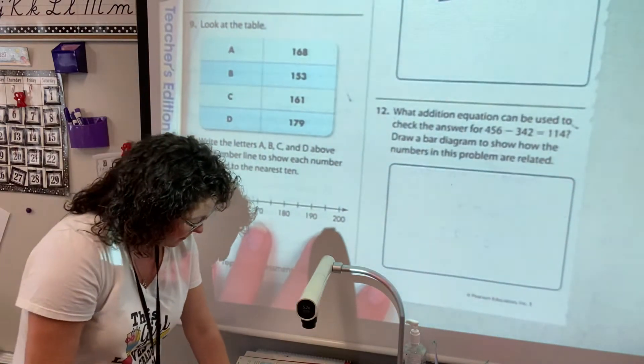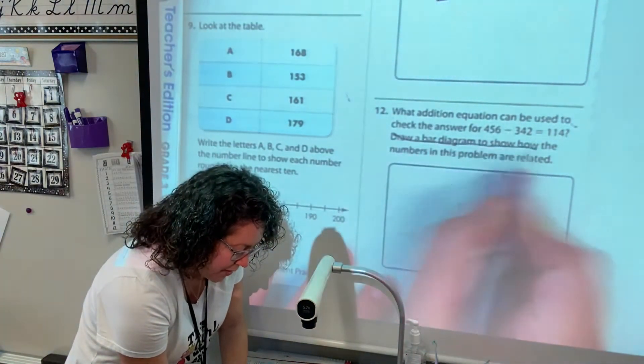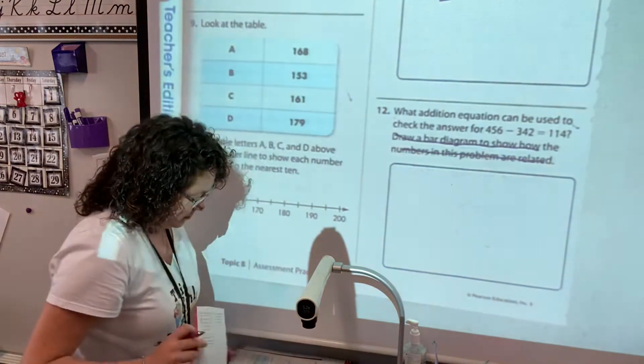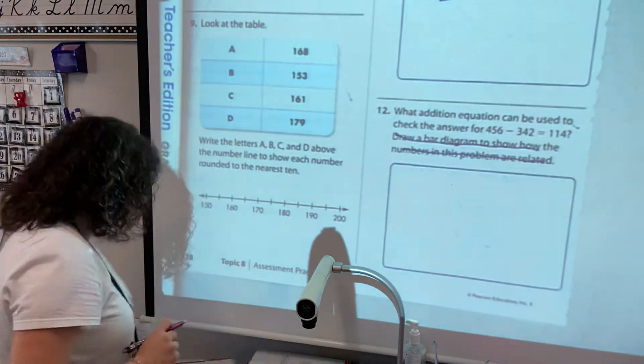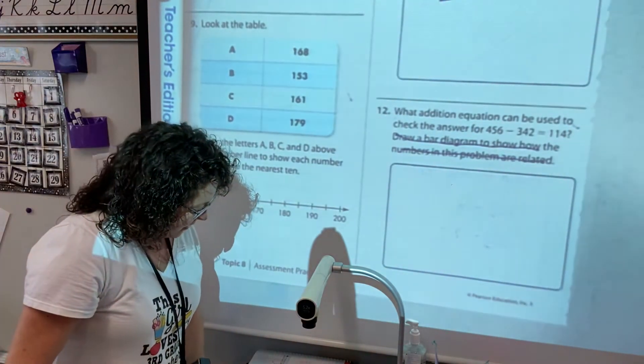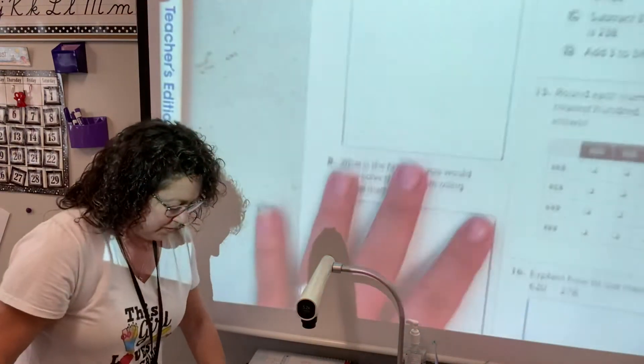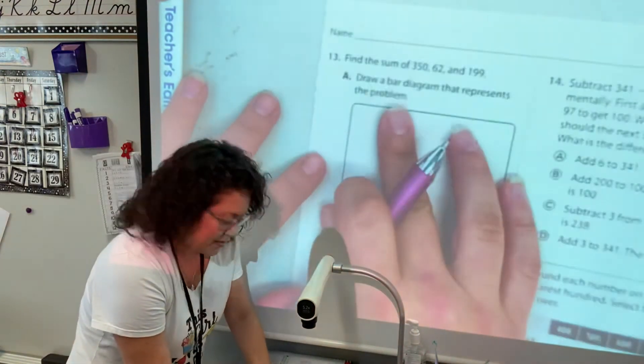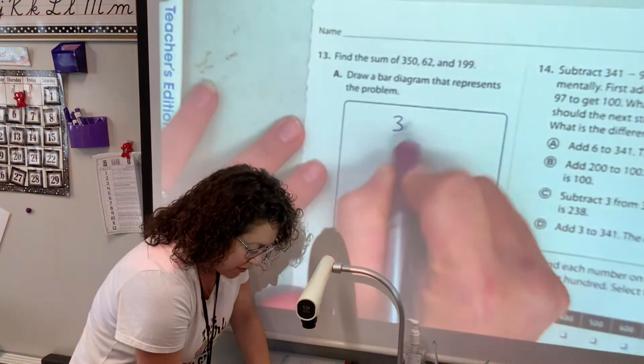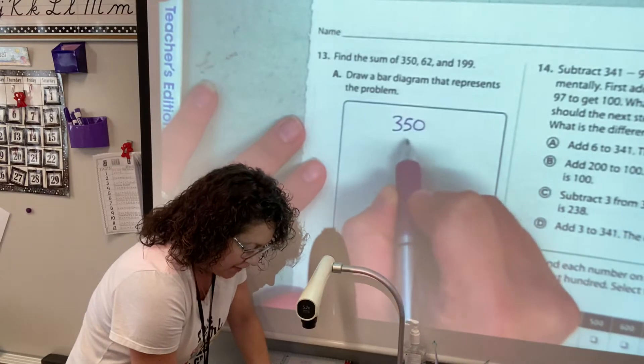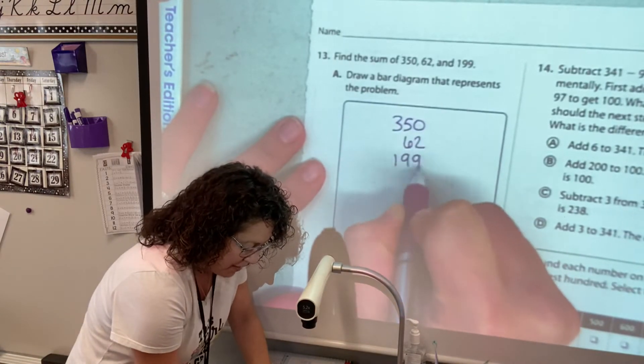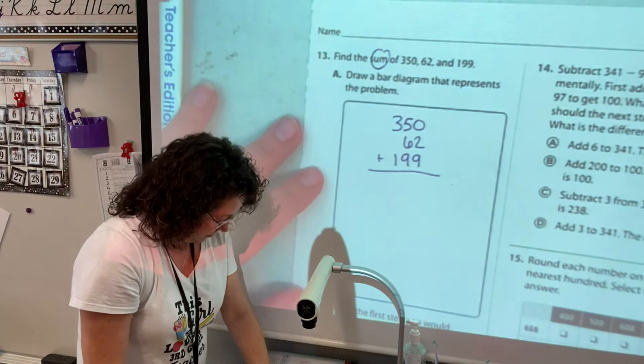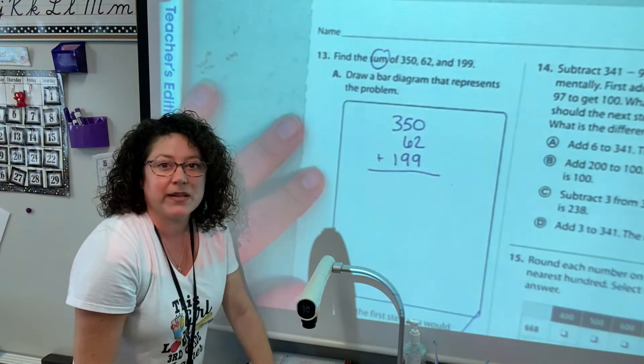Number 12, it says draw a bar diagram. If you want to draw a bar diagram you can, if you don't want to you don't need to. Okay, then on the next page, page 329. Number 13 says draw a bar diagram, you don't need to unless you want to. If you want to just stack and add, that is fine because it says sum. And part B, we're not going to do that, so you can X out part B.